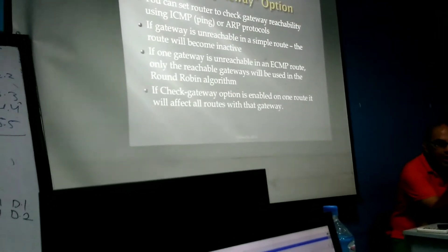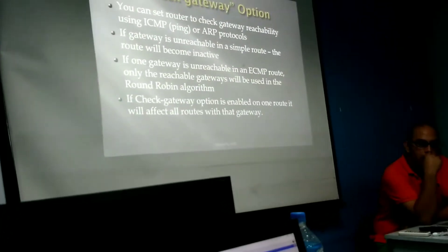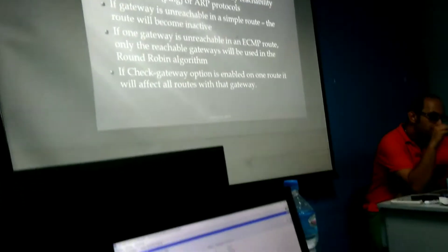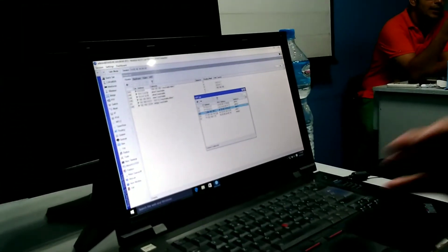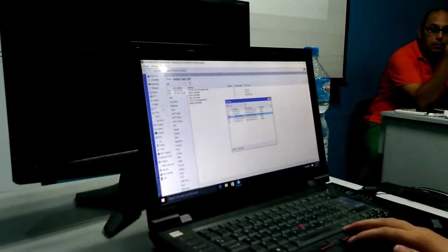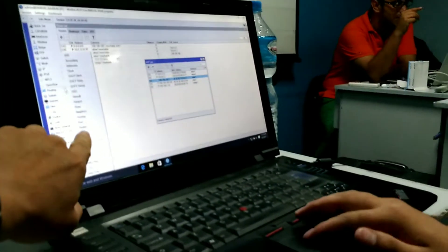When you open one of your routes, you can see there's an option called check gateway. Check gateway has two modes. R PIN means continuously in a specific interval, which is 10 seconds.